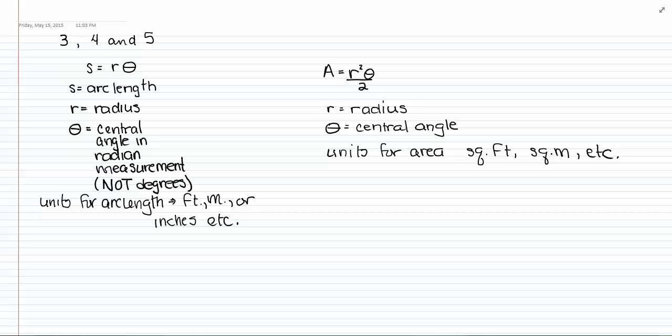The S equals R theta formula is for finding arc length. S is arc length, R is the radius, theta is the angle. So in other words, if you're looking at a circle and you want to know a piece of it, for example, you want to know what's this length of this arc, you have to know the angle, you have to know the radius, and then multiplying those two together gives you the arc length.